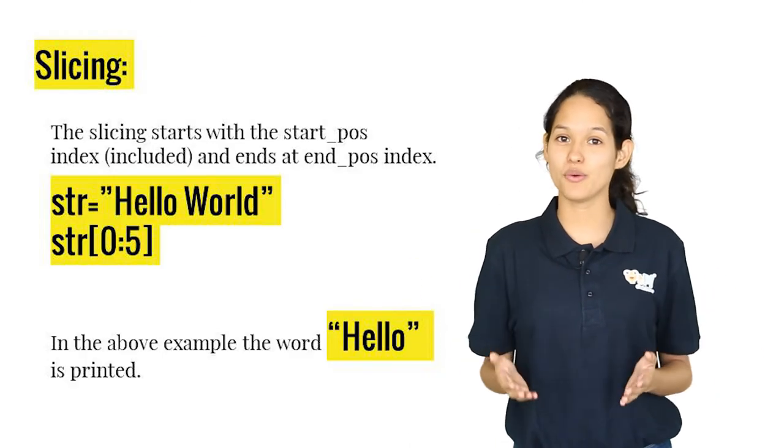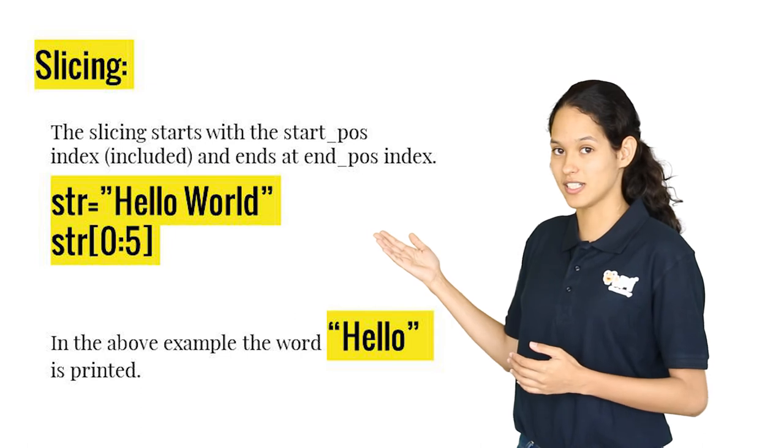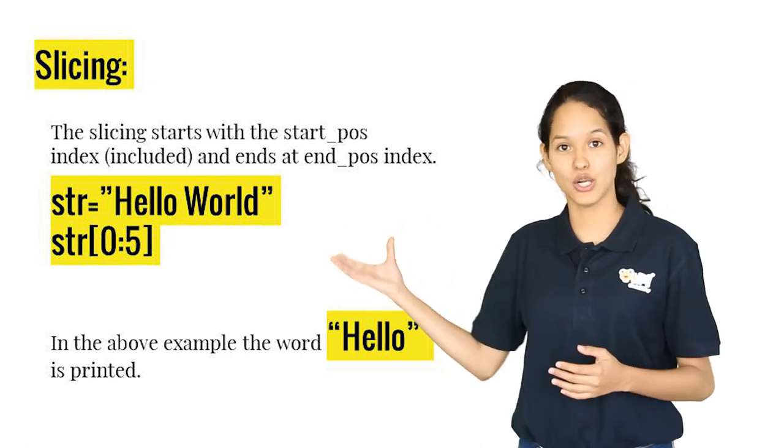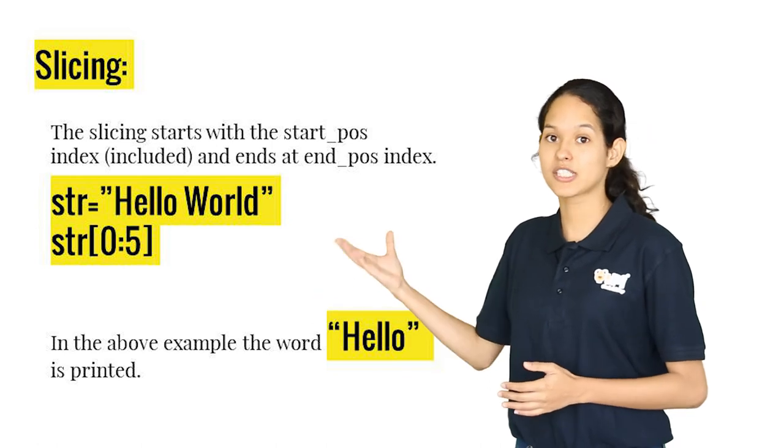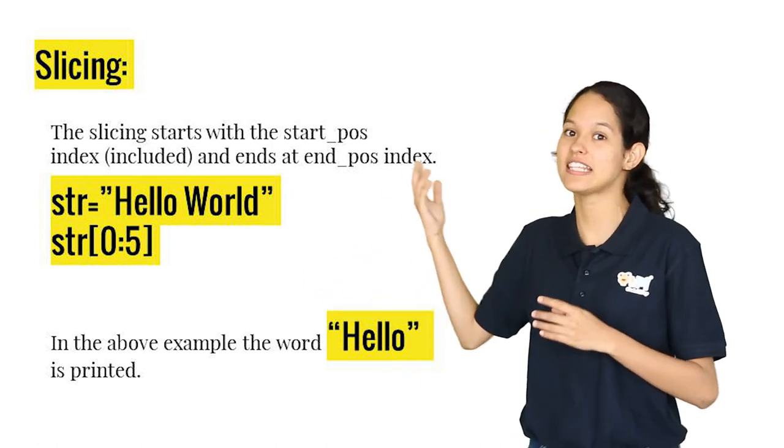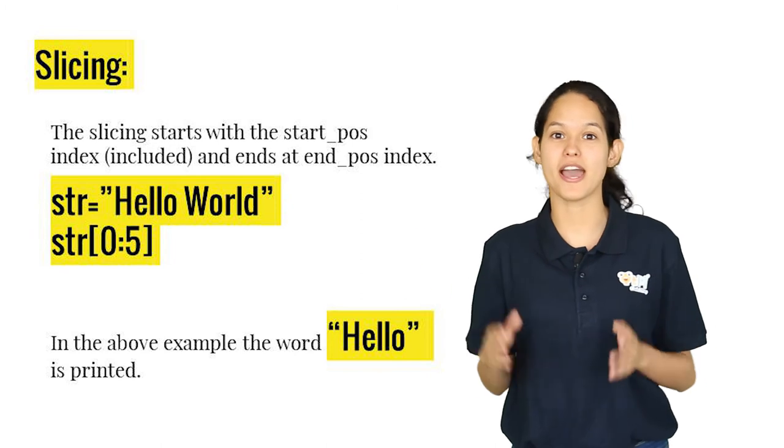Now let's take a look at what is slicing. Here's a string hello world. If you want to extract hello from the string, you have to mention the variable name, square brackets, and in between you have the starting and the ending position separated by a colon.